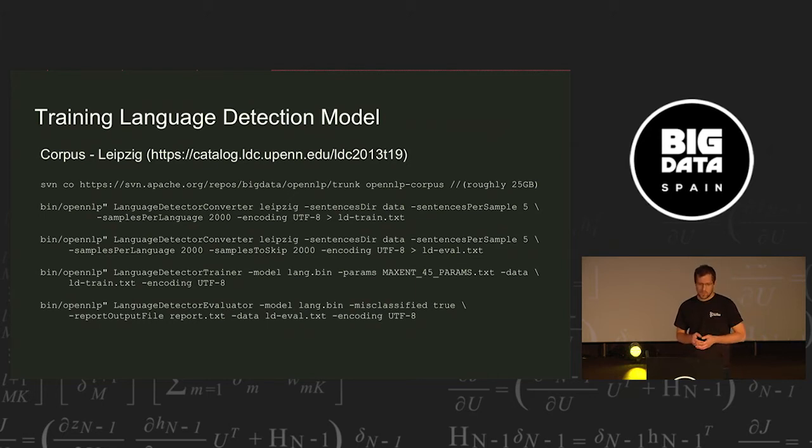So, this will be written to the LD train TXT, and then we do the same for the evaluation data, but now it's important, this doesn't overlap. So, here we tell it to skip 2,000 examples, and then only take some different set of samples. Next step is to train the language detector. That's the language detector train command. So, we tell it where to write the model, the parameters, where to find the data, and that's it. This will run for quite some time, it's also memory intensive, but eventually, you will get the language detection model.